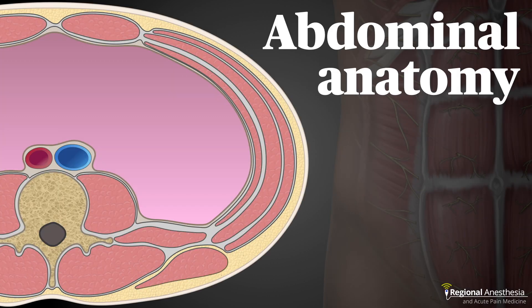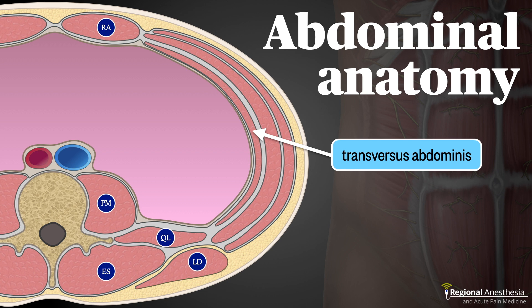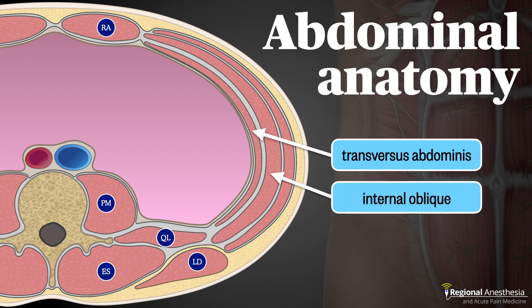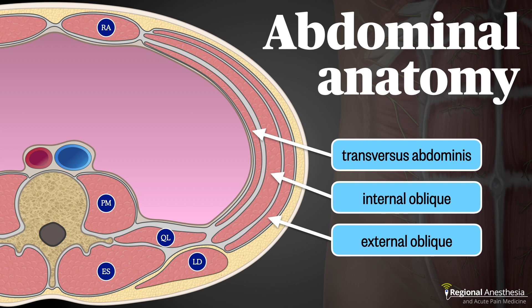The abdominal wall is made up of several muscles. Posteriorly, we have the psoas major, the erector spinae group, the quadratus lumborum, and latissimus dorsi. Running down the anterior midline is the rectus abdominis muscle. The lateral wall of the abdomen consists of three stacked muscles and fascia layers. The innermost is the transversus abdominis, the middle and thickest layer is the internal oblique, and the outermost is the external oblique muscle.